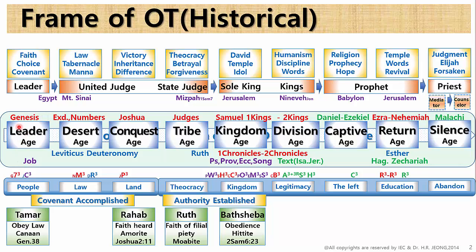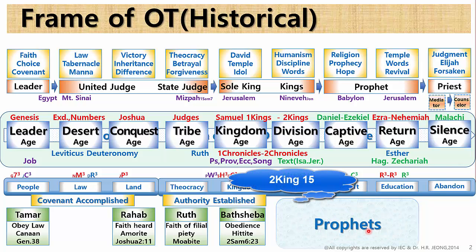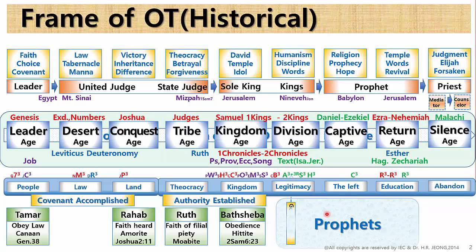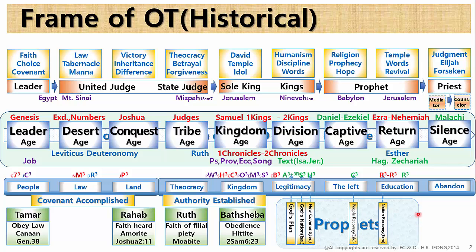Prophets started to come later during 2 Kings 15 and onwards. The main purpose of these prophets was to deliver the messages from God to the people and convey His plans: God's nation in Isaiah, new covenant in Jeremiah, restoration of the people in Ezekiel, restoration of God's kingdom in Ezra, the recovery of holiness in Nehemiah, and finally God's calling of return in Zechariah. This is the main outline of the story of prophets.